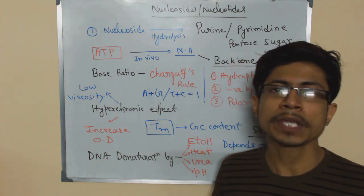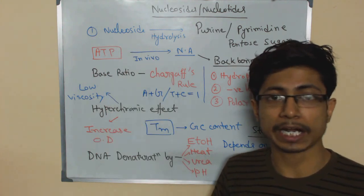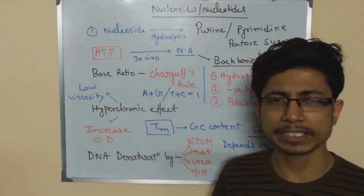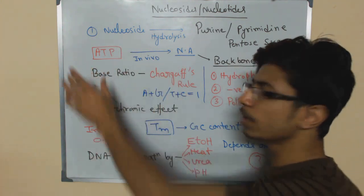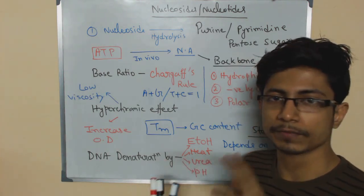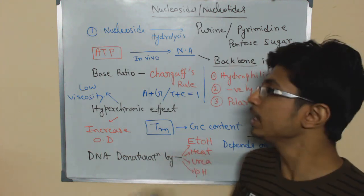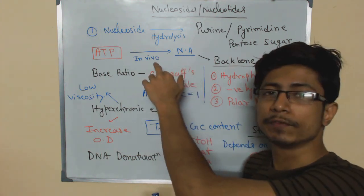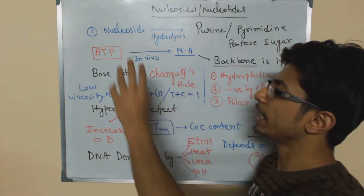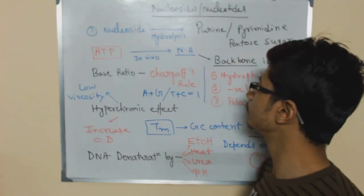Pentose sugar means ribose sugar, obviously for DNA it is deoxyribose, and these are the building blocks for DNA and RNA both. Very easy, very basic. Now ATP or adenosine triphosphate acts as the most abundant form of nucleotide that is available in our body which helps in the production of nucleic acid in vivo. That's why I put it in the red color there, it's very very important.